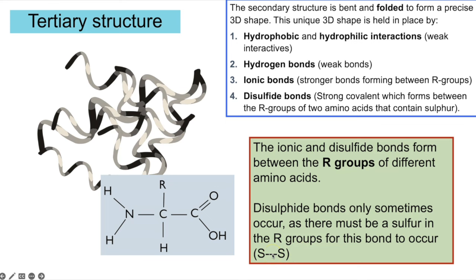The tertiary structure is further folding that creates a unique 3D shape, held in place by a range of bonds: hydrophobic and hydrophilic interactions (weak), hydrogen bonds (weak), ionic bonds (stronger), and disulfide bonds (the strongest — covalent bonds between sulfur atoms on R groups). Disulfide bonds only form if the R group contains sulfur. A three-mark definition: further folding (1), unique 3D shape (2), naming the bonds (3).